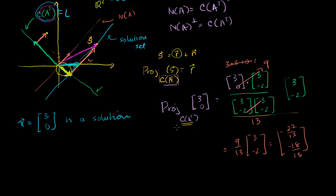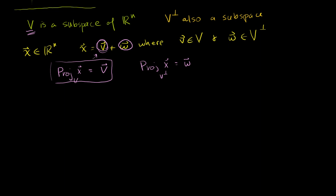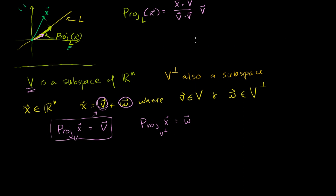We see this is consistent with our new, broader definition of a projection onto any subspace. Here we were able to compute it because the subspace happened to be a line. But I've defined projection onto an arbitrary subspace — and so far I haven't given you a computational way to figure it out when the subspace isn't a line. In fact, I haven't yet shown that projection onto an arbitrary subspace is even a linear transformation. We know projection onto a line is linear, but I'll prove that for the general case in the next video.